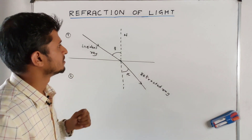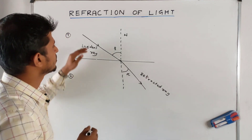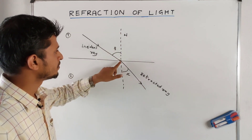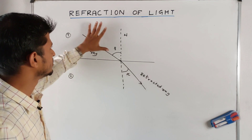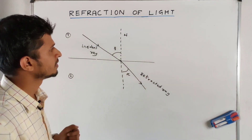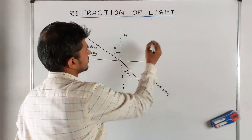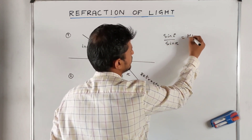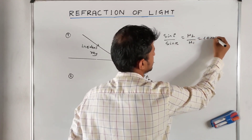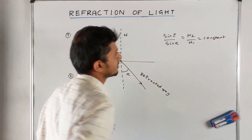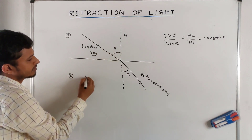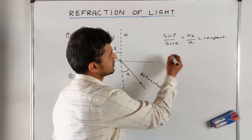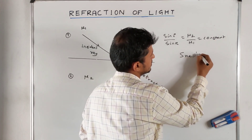The laws of refraction: the first law states that the incident ray, refracted ray, and the normal at the point of incidence all lie in the same plane. The second law states that sin i divided by sin r is equal to mu 2 divided by mu 1, which is a constant — where mu 2 is the refractive index of the second medium and mu 1 is the refractive index of the first medium. This is also called Snell's law.